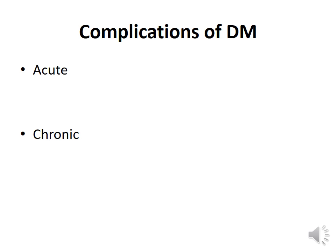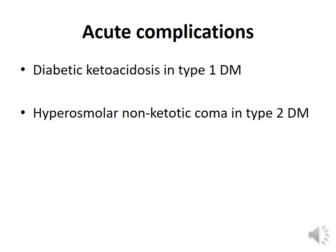Complications of diabetes mellitus can be acute or chronic. Acute complications include diabetic ketosis, predominantly seen in type 1 diabetes, and hyperosmolar non-ketotic coma in type 2 diabetes. In type 1 there is severe insulin lack leading to ketone body development. In type 2, insulin levels can be normal or even high, so ketone body formation is relatively less likely.